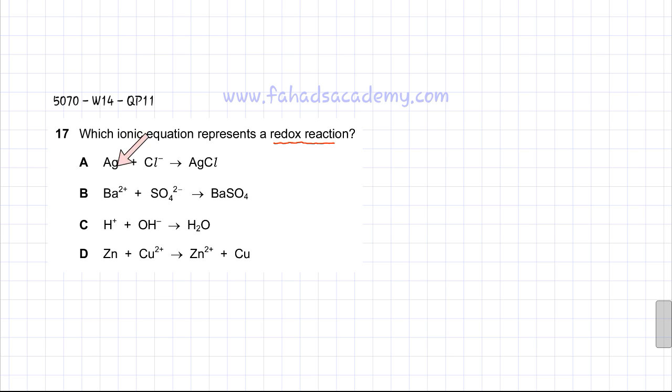If you look at the first option, silver is +1 and Cl is -1. In this ionic compound, AgCl, silver is still +1 and Cl is still -1. So there is no change in oxidation state, which means no one actually ended up gaining or losing electrons.